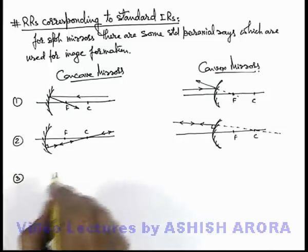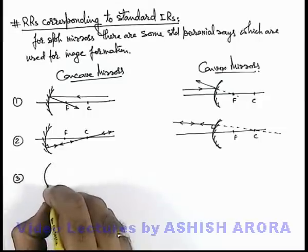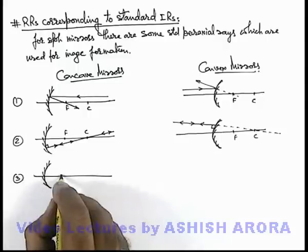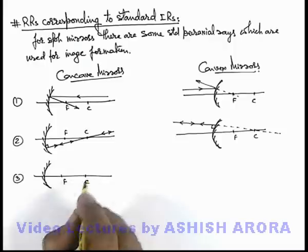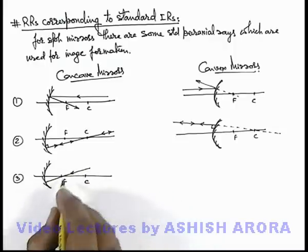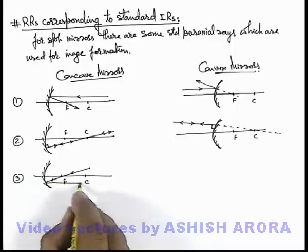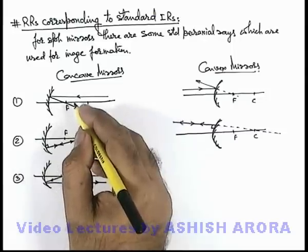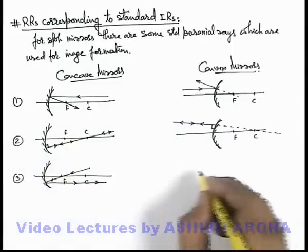A third ray is the one which passes through focus before incidence. If a light ray is incident on the mirror after passing through focus, then this light ray will become parallel after reflection. It is just the reverse light ray of ray 1.